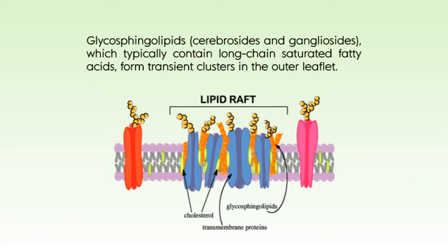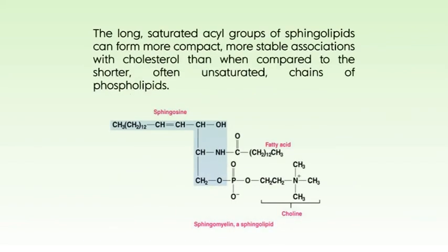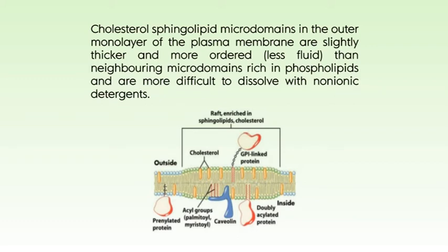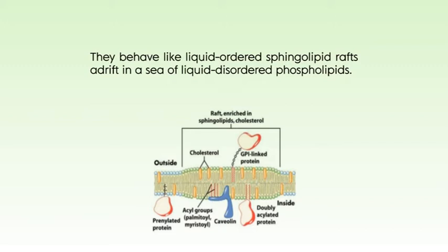Glycosphingolipids, like cerebrosides and gangliosides, which typically contain long-chain saturated fatty acids, form transient clusters in the outer leaflet. The long saturated acyl groups of the sphingolipids can form more compact, more stable associations with cholesterol than when compared to the shorter, often unsaturated chains of the phospholipids. So cholesterol-sphingolipid microdomains in the outer monolayer of the plasma membrane are slightly thicker and more ordered — less fluid — than neighboring microdomains rich in phospholipids, and are more difficult to dissolve with non-ionic detergents. They behave like liquid-ordered sphingolipid rafts adrift in a sea of liquid-disordered phospholipids.